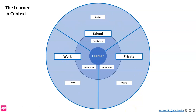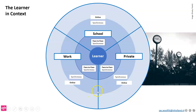I'm going to split online into two different elements. The first element, the inner ring here, is what we call synchronous. Here you can see the clocks are all on the same time, so you're learning at the same moment in time. The people you're interacting with, whether it's a teacher or fellow students, are in the same moment in time. That can be in person, face-to-face, or it can be online.